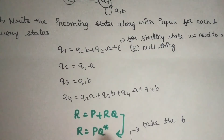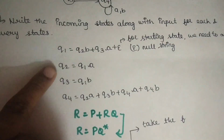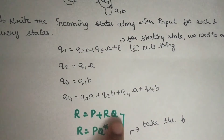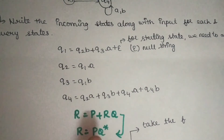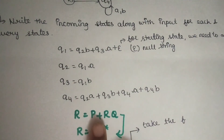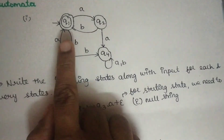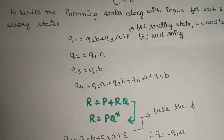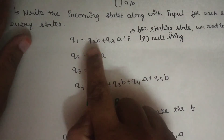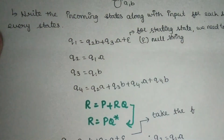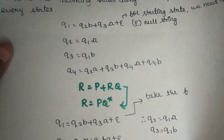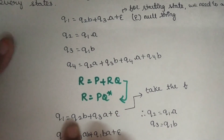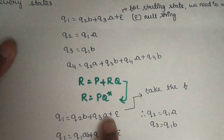Suppose you look at these states: R equal to P plus RQ — if it is in this form, then R equals P into Q closure. Now, looking at the final state — Q1 is the final state. So Q1 is equal to Q2B plus Q3A plus Epsilon.